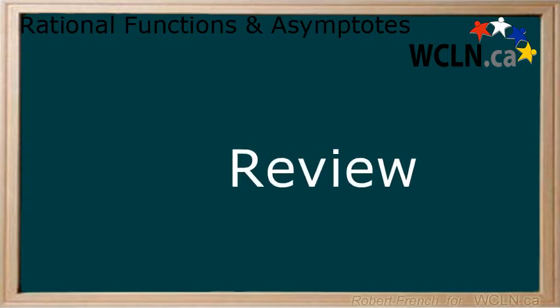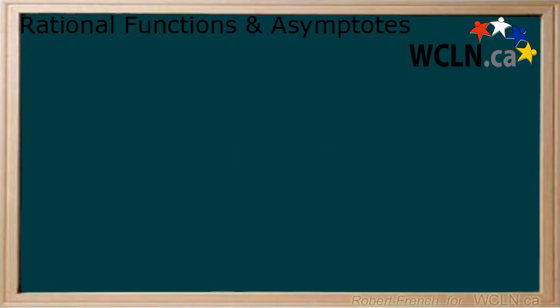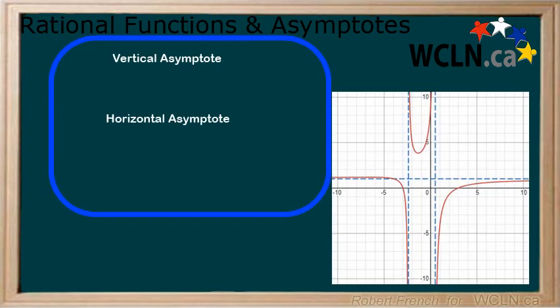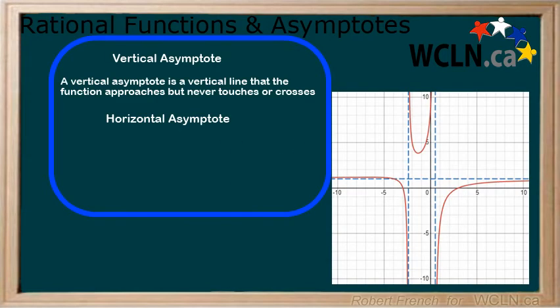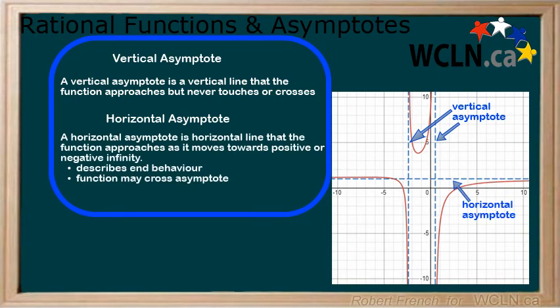In this lesson, you learned about asymptotes of rational functions. You learned that a function approaches but never reaches or crosses a vertical asymptote. A horizontal asymptote is used to describe end behavior, and the function may cross the asymptote.